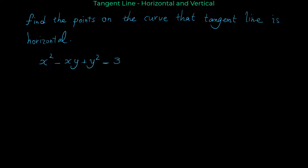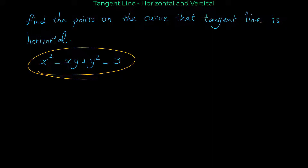When the tangent line is horizontal, it means that the slope of the tangent line is 0. The slope of the tangent line is the derivative of the function. So we have to find the points where the derivative of this function equals 0.